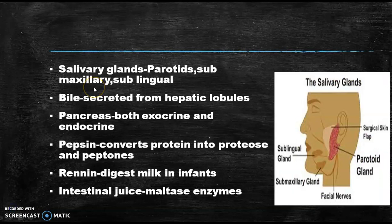Next we will see the salivary glands. There are three pairs of major salivary glands in our body. The first are the parotid glands — they are the largest salivary glands, located just in front of the ears. The second are the submaxillary glands, which are minor salivary glands. The third are the sublingual glands, which are present below the tongue.